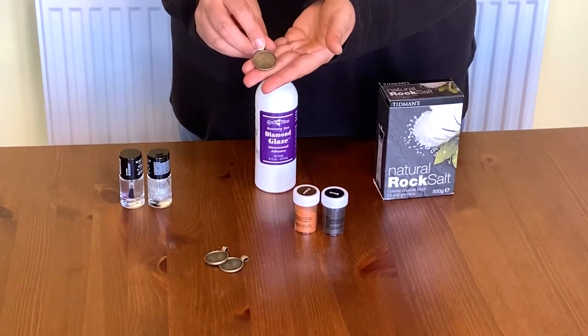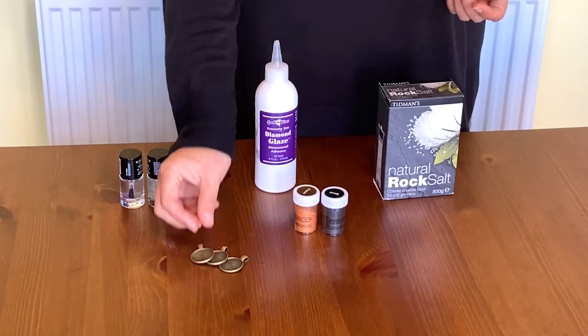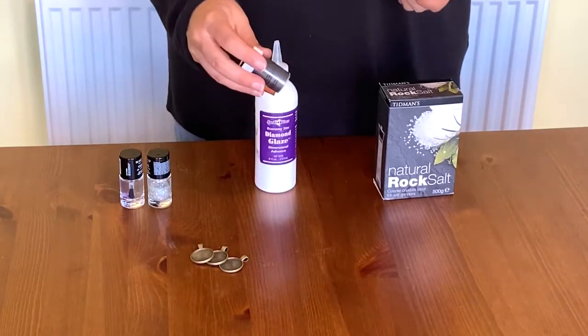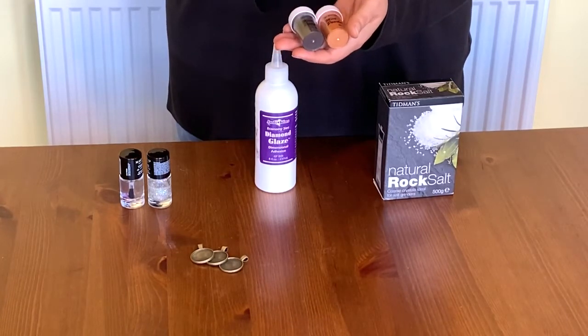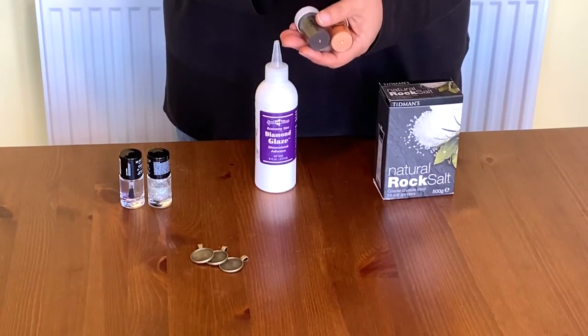You're going to need a base for your necklace. I've used these particular ones. And then you're going to need some colour. Now, I'm using mica powder. If you have this at home then it is fantastic to use to colour the rock salt.